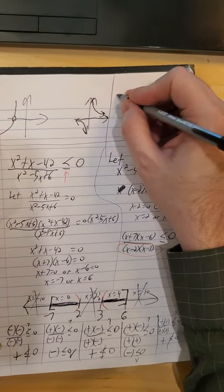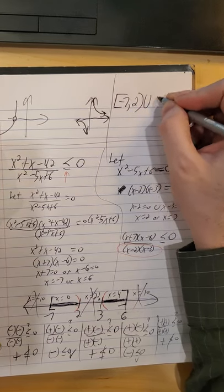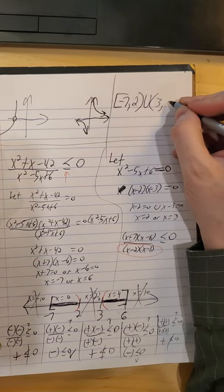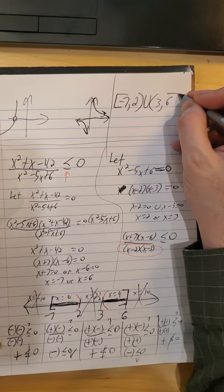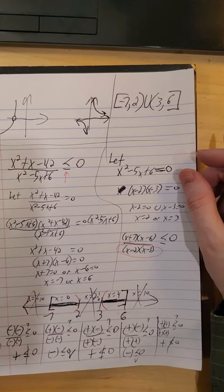And I didn't leave myself quite enough space to put my answer in the right spot. So we'll put it up here in our little corner here. So from negative 7 up to but not including 2, union 3 exclusive to 6 inclusive. So those are the parts that we get to keep.